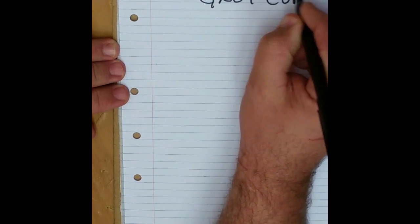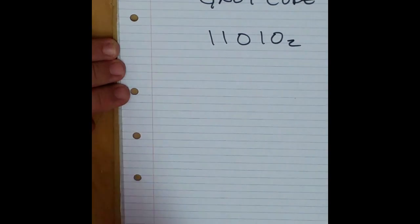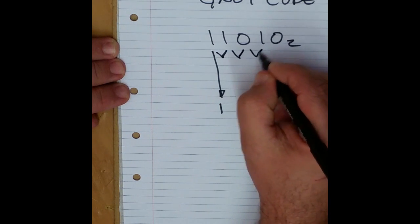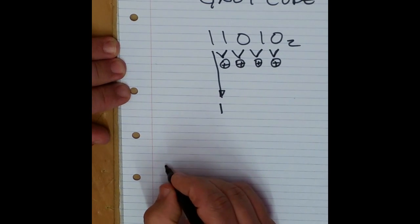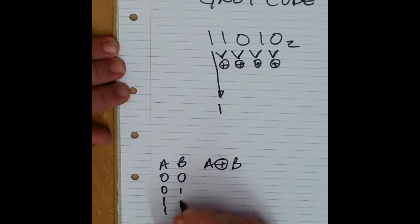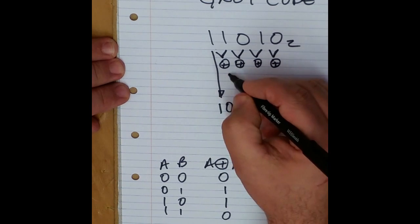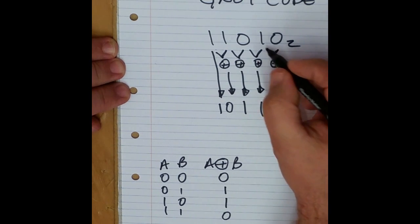The last one, which you probably should have known already because some people have asked about committing tables to memory, is Gray code. Gray code, unlike two's complement, is not actually reversible and it's not fixed to a particular number of bits. Write down your binary number and start with the most significant bit. To convert to Gray code, take each pair of bits and perform exclusive OR. Exclusive OR: if they're equal it's a zero, if they're not equal it's a one. So one XOR one gives zero, one XOR zero gives one, zero XOR one gives one, and one XOR zero gives one.